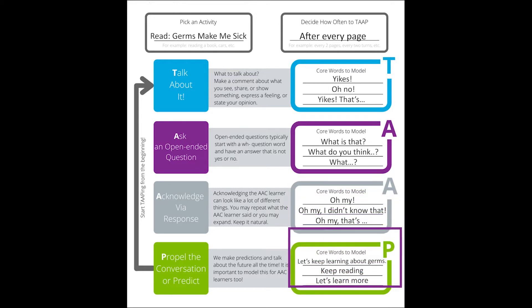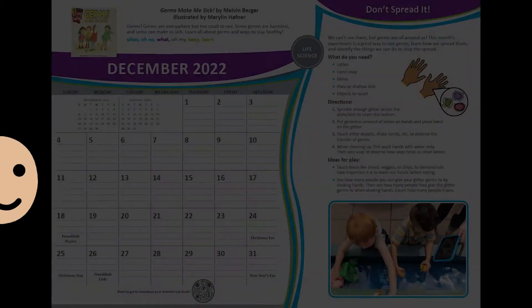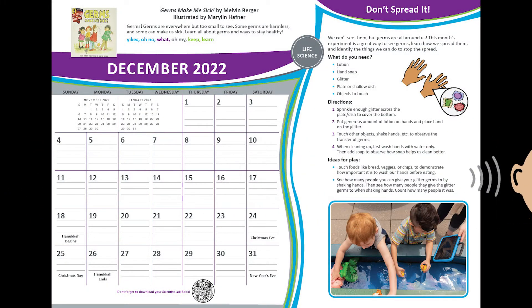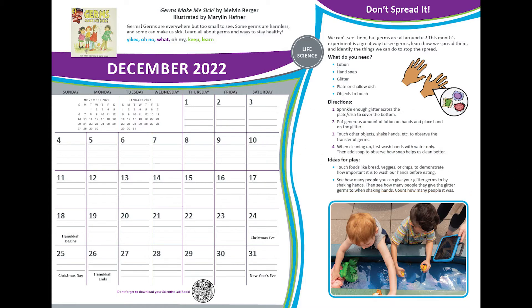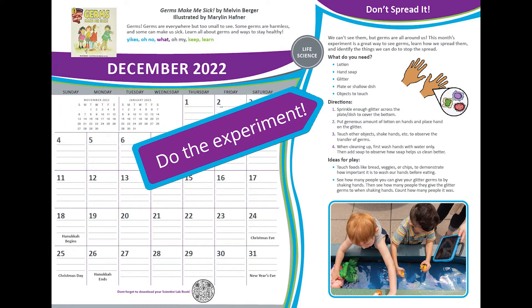Finally, you propel the activity forward or predict. We suggest you model the words Keep and Learn. You could say, Let's keep learning about germs. Keep reading. Let's learn more. Enjoy simply listening to the story or tap your way through demonstrating words and locations for the AAC learner on their technology, find other words that are interesting to the AAC learner, and use these words in other activities.